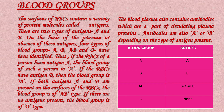Blood groups: the surfaces of RBCs contain a variety of protein molecules called antigens. There are two types of antigens, A and B. On the basis of the presence or absence of these antigens, four blood groups — A, B, AB, and O — have been identified. If the RBCs have antigen A, the blood group is A; if antigen B, the group is B; if both A and B are present, the group is AB; and if no antigens are present, the group is O. The blood plasma also contains antibodies, which are A or B depending upon the type of antigen present.